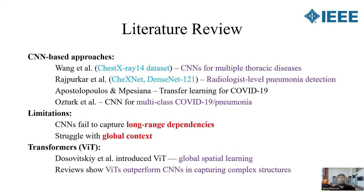Let's move into the literature review. Several studies have used convolutional neural networks, or CNNs, for thoracic disease classification. For example, Wang et al. developed the ChestX-ray dataset for multiple diseases. Rajpurkar et al. introduced CheXNet, which achieved radiologist-level pneumonia detection. Other researchers applied transfer learning for COVID-19 and multi-class classification.